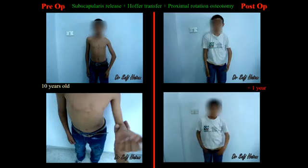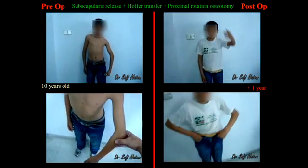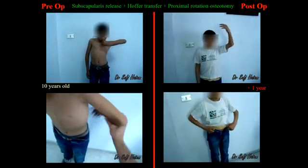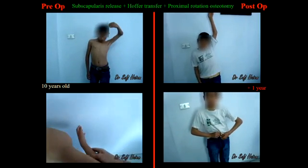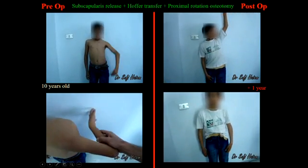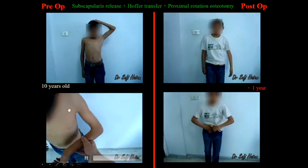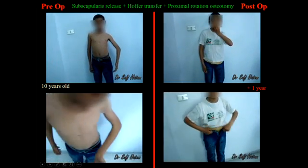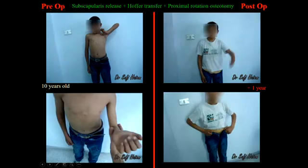This is the case of a 10-year-old child. He had essentially an internal rotation contracture of the shoulder. The range of motion in internal rotation must be systematically checked because an excessive humeral derotation may be harmful.